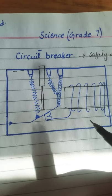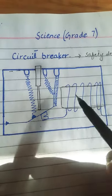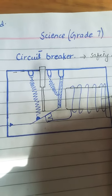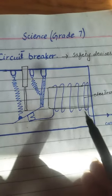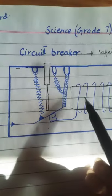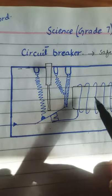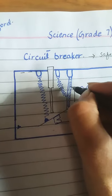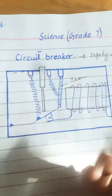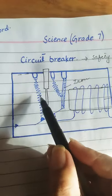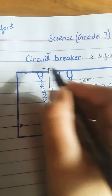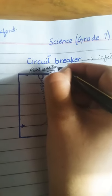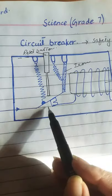Here is the circuit breaker and here is how it works. In the circuit breaker we have the electromagnet. This electromagnet is attached with an iron bar. These are the springs, this is the reset button, and these are the contacts.